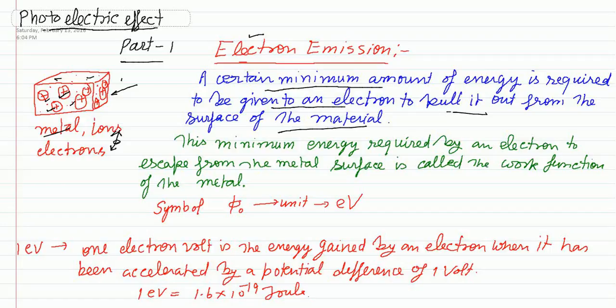Because of that attractive force, these electrons cannot escape from the surfaces of the material. But if we provide some energy to these electrons which is greater than the potential force between the ions and electrons, only then can these electrons escape from the surface of the metal.